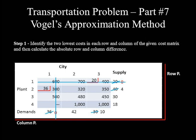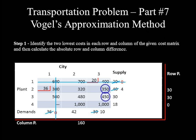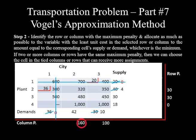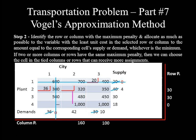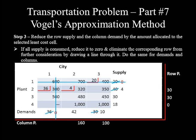Continuing with penalties for the remaining undeleted rows and columns: row 2 penalty = 350 − 320 = 30, row 3 penalty = 480 − 450 = 30, row 4 penalty = 0. Column 2 penalty = 480 − 320 = 160, column 3 penalty = 450 − 350 = 100. The maximum penalty is 160, so column 2 is next. The least cost in column 2 is 320, with demand 42 and supply 4. Allocating 4 units reduces demand to 38 and supply to 0. Row 2 is eliminated because plant 2 supply is fully consumed.